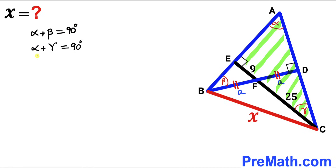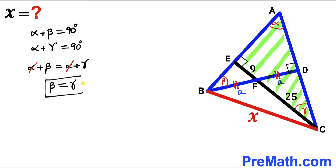We know one angle is alpha, and I'll label another as angle gamma, with a 90-degree angle present. So alpha plus gamma equals 90 degrees as well — they are complementary angles too. Comparing the two equations, since the right-hand sides are identical, we can equate the left-hand sides: alpha plus beta equals alpha plus gamma, so beta equals gamma.